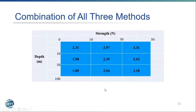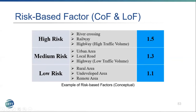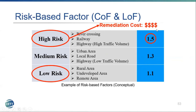The risk-based factor requires further research involving risk assessment for consequence and likelihood. High-risk environments include river crossings, railway crossings, and highway crossings, which have high remediation costs. Low-risk environments include rural and remote areas where remediation costs are significantly lower. It is more appropriate to have a higher factor of safety for high-risk environments compared to low-risk ones.